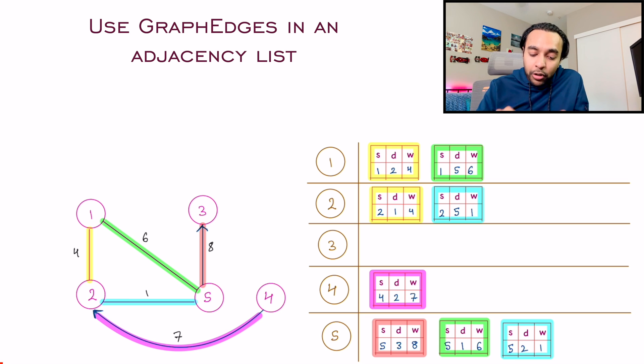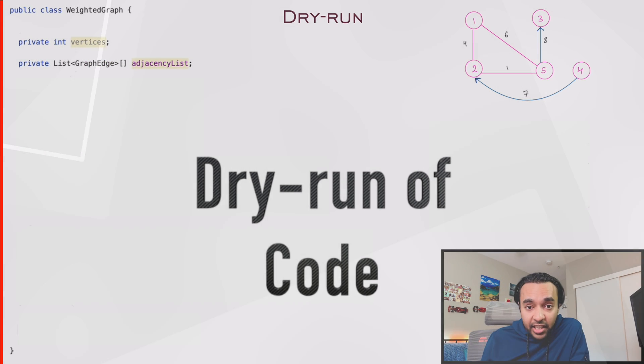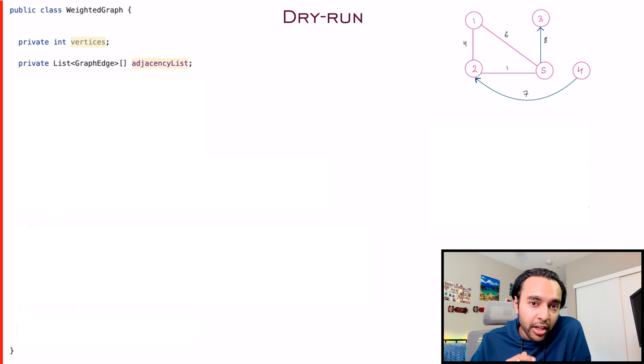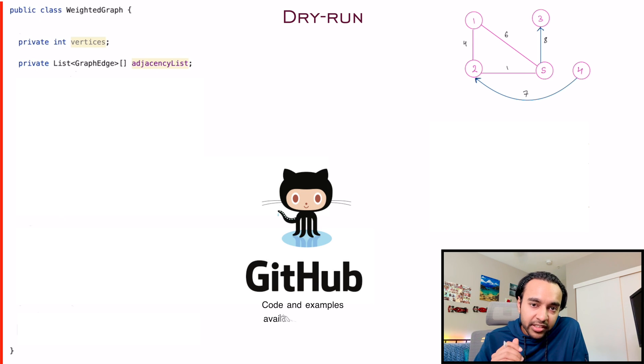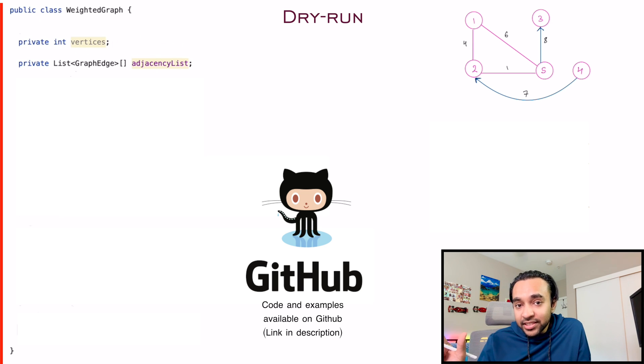So how do you go about implementing this now? So over here, I have this class weighted graph, and we will try to fill in all the details. First of all, what is the most important components that we know? We know that we will need the number of vertices, and then you have to define the adjacency list.